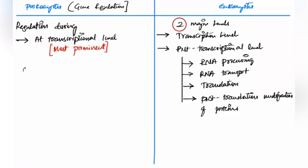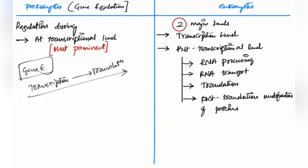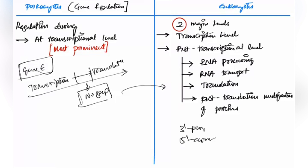In prokaryotes, gene expression involves transcription-coupled translation — transcription and translation happen in one go with no gap between them. In eukaryotes, there is a gap: after transcription, 3' polyadenylation, 5' capping, RNA editing, and intron splicing all occur during RNA processing. Because prokaryotes lack this processing, you can only control gene expression at the transcription level.